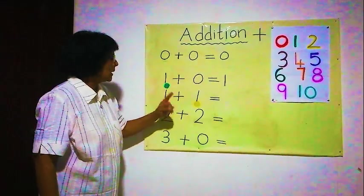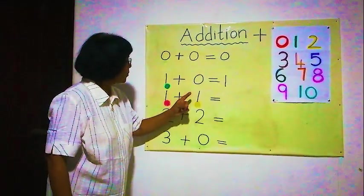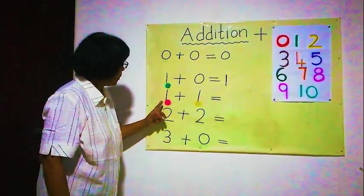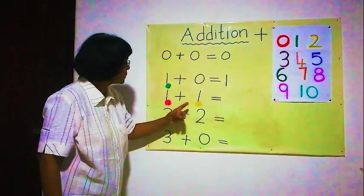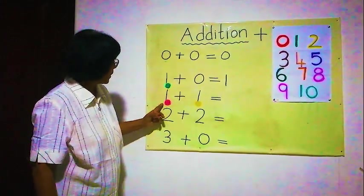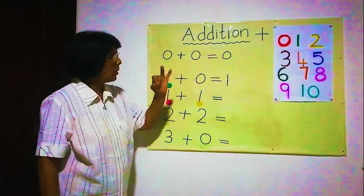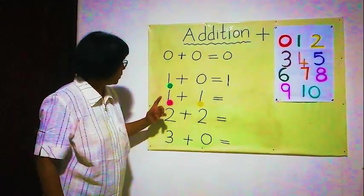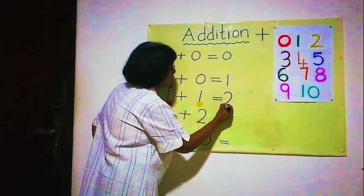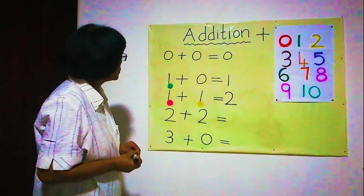Now we must see the answer: one and one makes? We will count the balls together. One, two. One red ball here, one yellow ball here. One and one — one, two. The answer is two. Answer is two. One and zero: one. One and one: two.